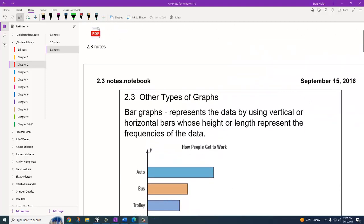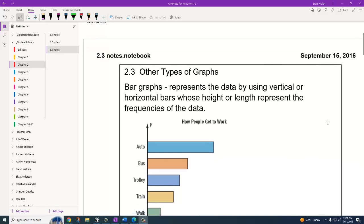So these are the notes for 2.3, where we're going to talk about other types of graphs. We did a histogram, frequency polygon, an ogive graph, and we also did those as relative frequencies where you do the percent, essentially, of the whole.